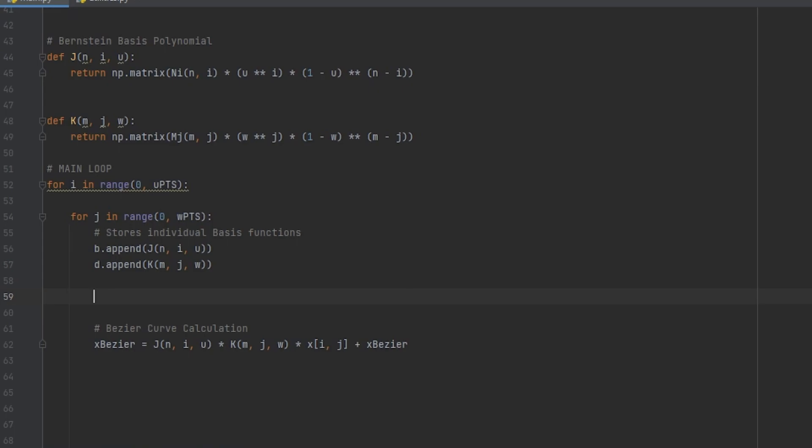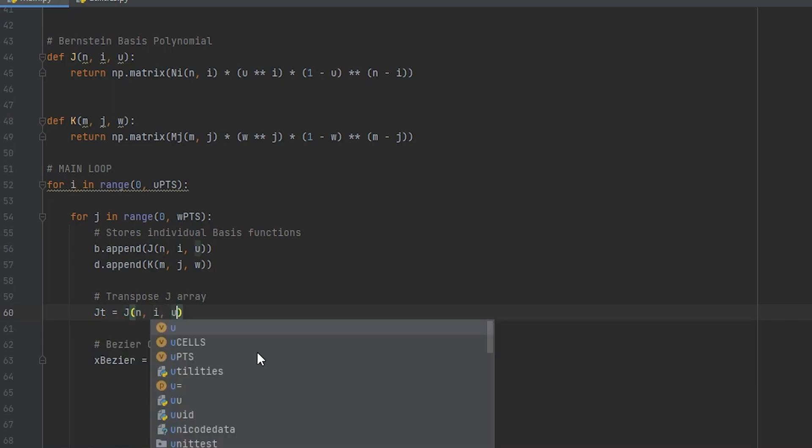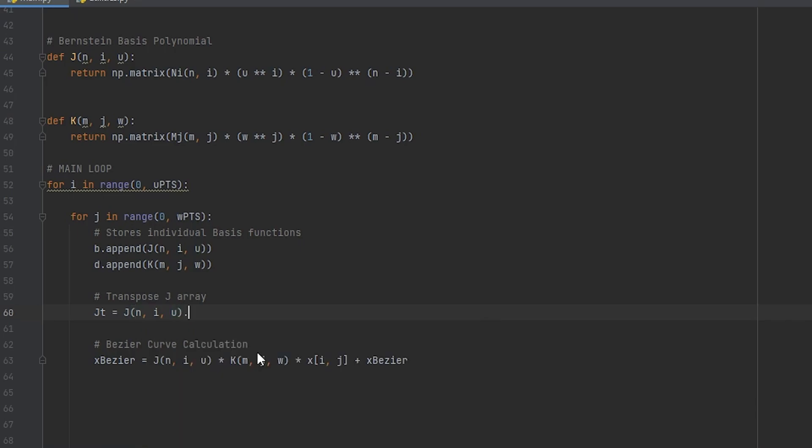So up here let's create a new variable JT or J transposed and let's call J in here we can use dot transpose now and this is exactly why we used NP matrix rather than NP array this doesn't work for arrays replace J with JT in the equation for the X Bezier and now let's do the same thing for Y and Z and just replace the relevant terms.